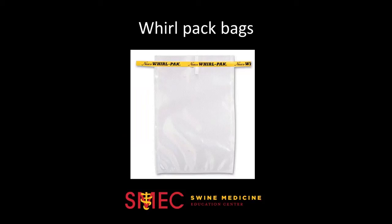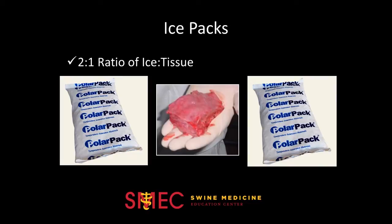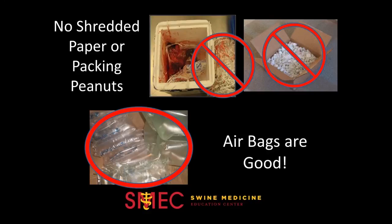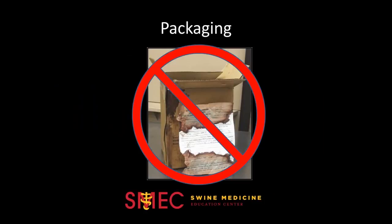Whirlpack bags are great for sending in samples of fresh tissue. Samples from each animal should be grouped together in one bag. Make sure there is a 2-to-1 ratio of ice to tissues. You may add airbags to protect samples during shipping, but do not add styrofoam pieces or shredded paper to the box, as they soak up moisture and become very messy. It is most preferred to package samples in a styrofoam box instead of a cardboard box because they don't leak. If necessary to ship in a cardboard box, be sure to place it in a leak-proof bag. The Postal Service will not ship any leaky boxes, charging the diagnostic lab and you a $25 fee and delaying processing of your sample.